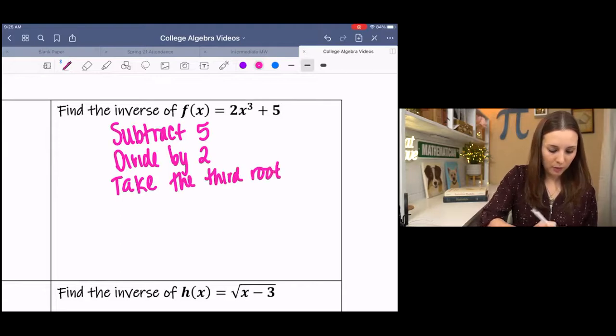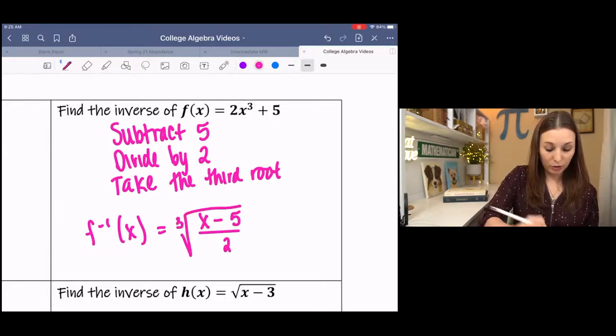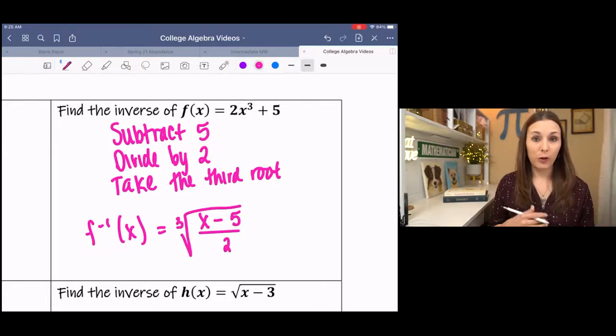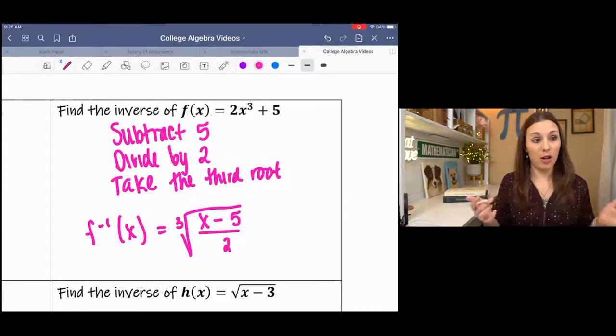So my inverse function would look like subtracting five, dividing by two, and taking the third root. And if we graphed those two functions, you would see that the two functions were symmetric about y equals x.